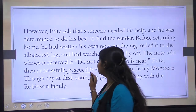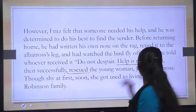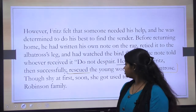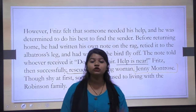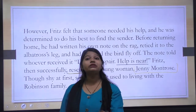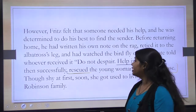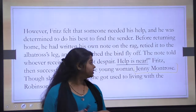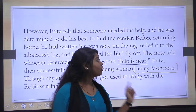Fritz successfully rescued the young woman. Her name was Jenny Montrose. Though shy at first, she soon got used to living with the Robinson family, becoming familiar with her new surroundings.